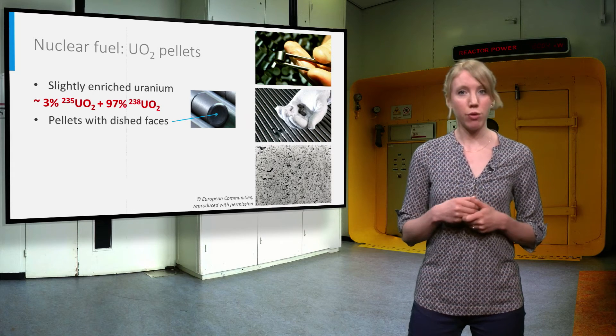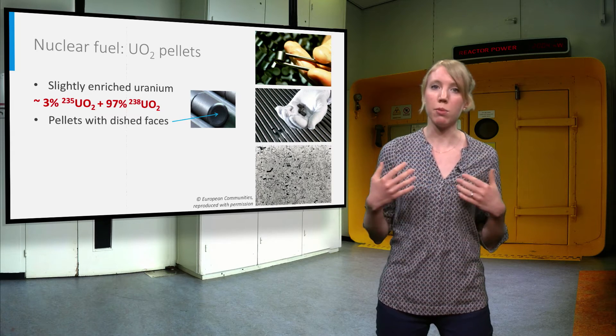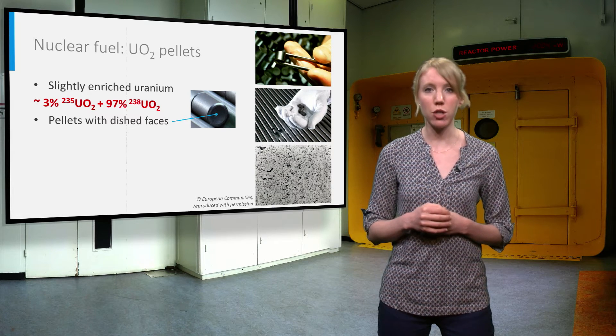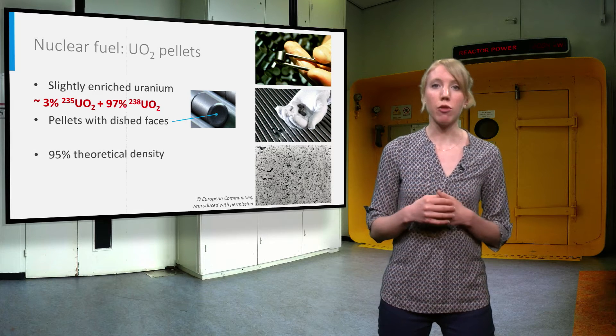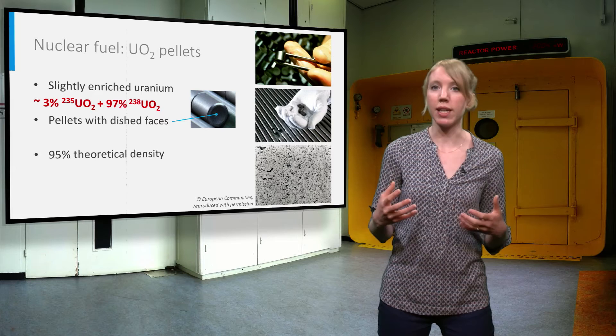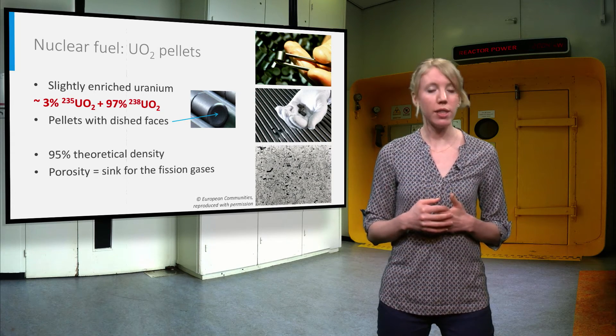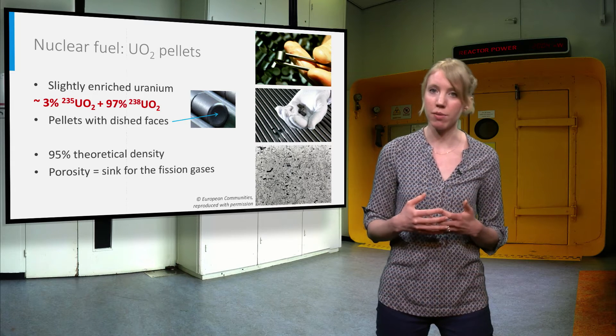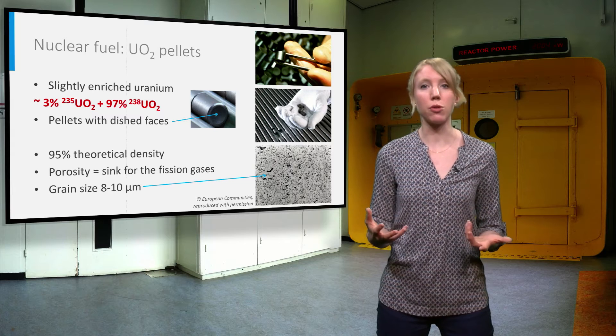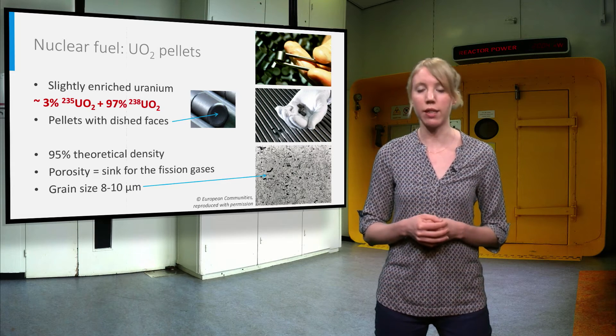The fuel is in the form of pellets with dished phases to accommodate the radial anisotropic expansion during irradiation. The density of the pellet is around 95% of the theoretical density. The remaining 5% porosity serves as a sink for the fission gases produced during irradiation. As for the microstructure, the fuel is made of grains with a size of 8-10 micrometers.